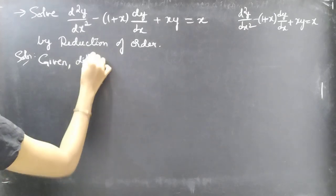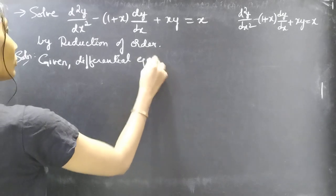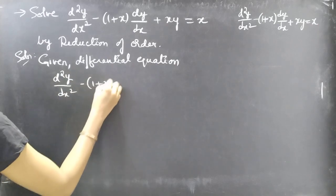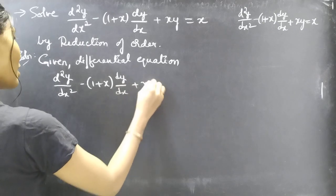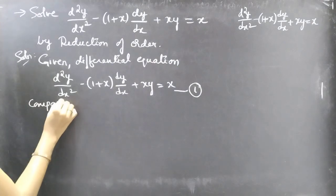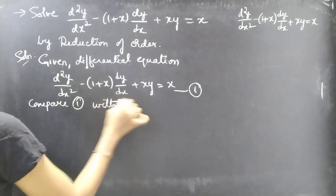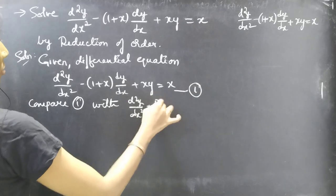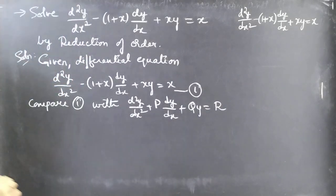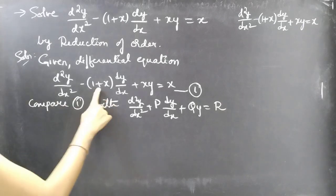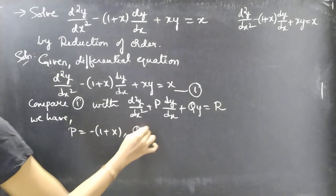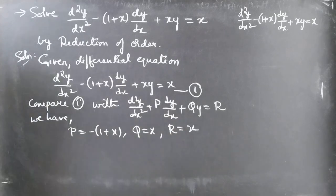The given differential equation is: d²y/dx² minus (1+x)·dy/dx + xy = x. Consider this as equation number 1. Now compare equation 1 with the standard form: d²y/dx² + P·dy/dx + Q·y = R. By comparing these two, we get P = minus(1+x), Q = x, and R = x.